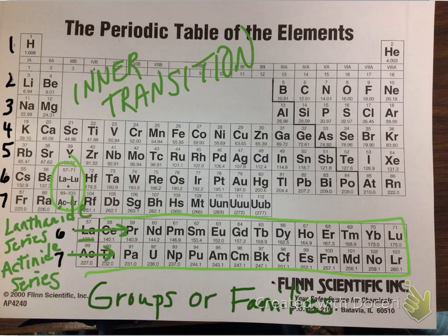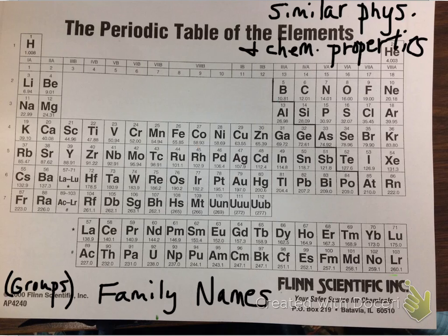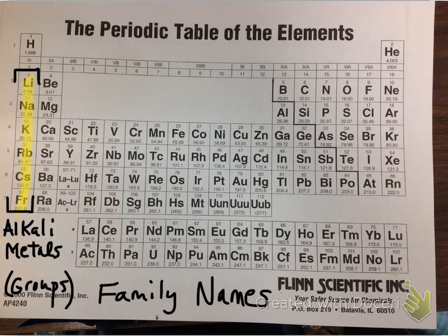Some of the groups or families have particular names. Group 1 — just the metals, so lithium through francium — are known as the alkali metals. You may find it helpful to color in the families in different colors to help you learn and remember the names.